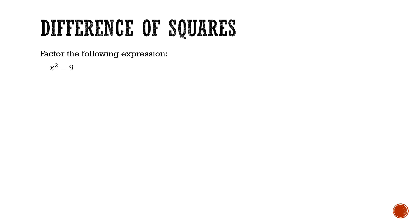We use the difference of squares approach when we have an expression that is a difference of squares. Let's take the expression x squared minus 9. We have the first term, x squared, which is really x squared. And the second term, 9, is really 3 squared. So we've got two terms squared, and we're taking the difference between them, indicated by subtraction.